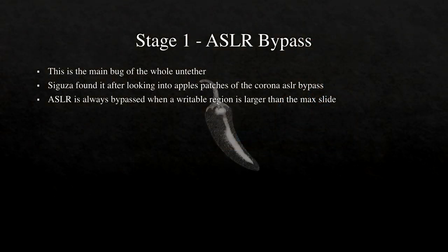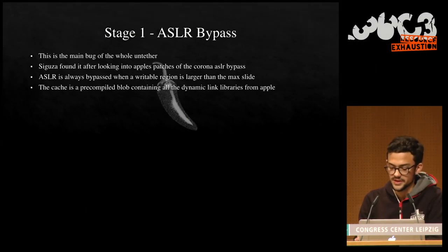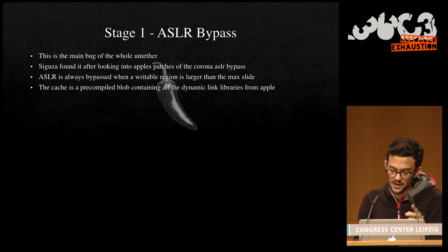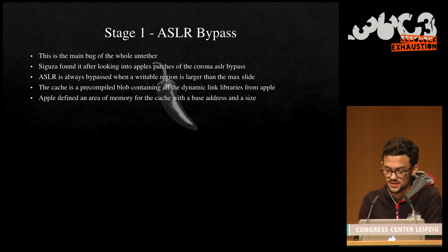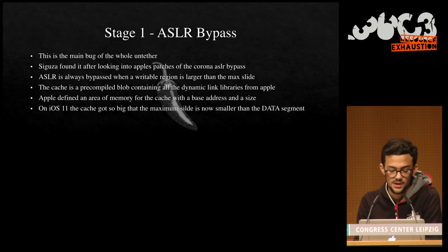Segura found this after looking into Apple's patches of Corona's ASLR bypass. From pod2g's presentation we learned that ASLR is always bypassed when a writable region is larger than the maximum slide — because there's always a writable address in process memory and you can brute-force the slide. Segura found the same problem with the dyld shared cache in iOS 11 and some versions of iOS 10. The shared cache is a pre-compiled blob containing Apple's dynamic linked libraries, compiled into one big file to optimize app load times and keep memory pressure low. On boot, the kernel calculates the slide and slides the cache once — it's used in every process.